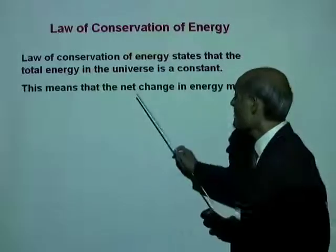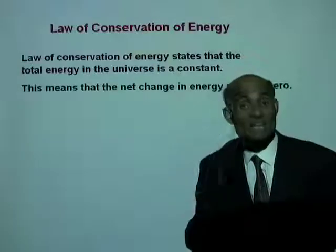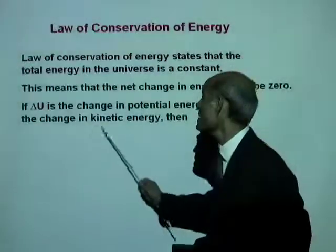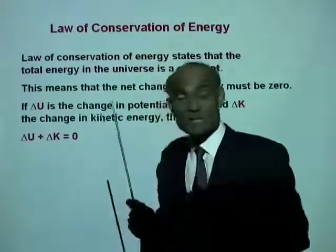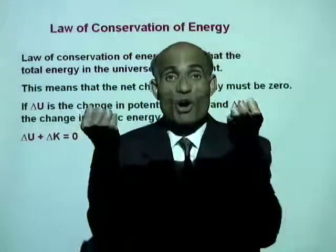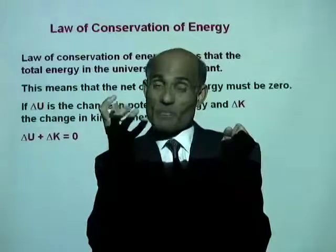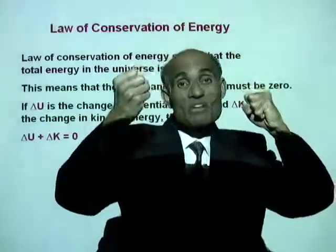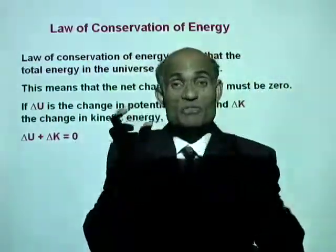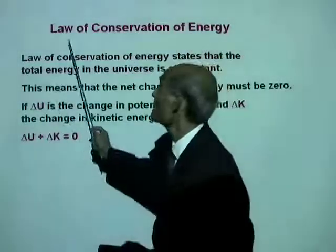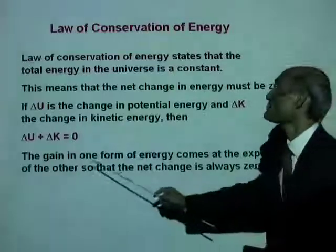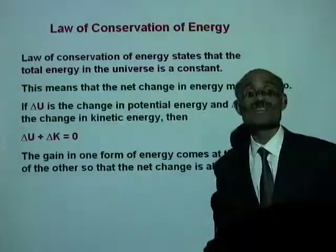This means that the net change in energy must be zero. If delta U is the change in potential energy and delta K is the change in kinetic energy, then delta U plus delta K equals zero. The total amount of change in energy will be zero. In other words, the total energy in the universe will never change. There could be a change in potential energy and a change in kinetic energy, but a change in one form comes at the expense of the other, so that if you add all the changes, the total change will be zero. That is the essence of the law of conservation of energy.